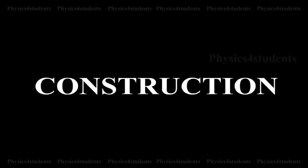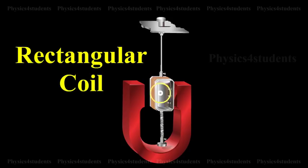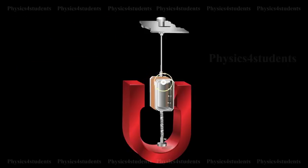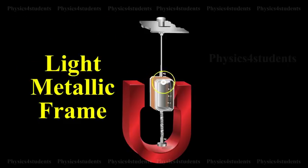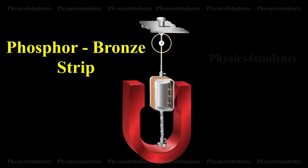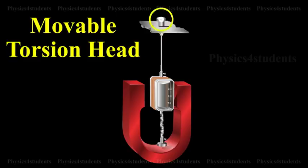Construction: It consists of a rectangular coil of a large number of turns of thin insulated copper wire wound over a light metallic frame. The coil is suspended between the pole pieces of a horseshoe magnet by a fine phosphor bronze strip from a movable torsion head.